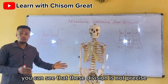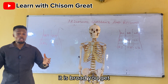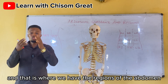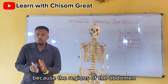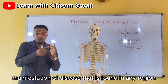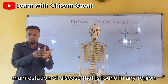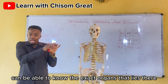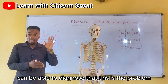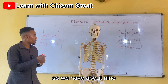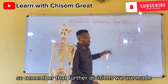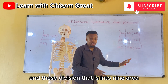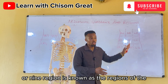However, these quadrants are not precise — they are broad and not specific. So a further division was made, and that is where we have the regions of the abdomen. The regions go more specifically, so that any manifestation of disease in any region allows a doctor or nurse to know the exact organs that lie there. We have nine regions in the abdomen, known as the regions of the abdominal wall.